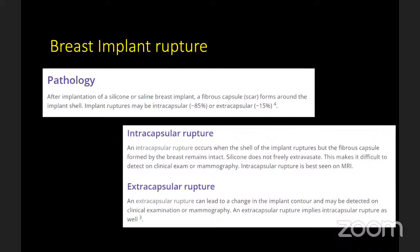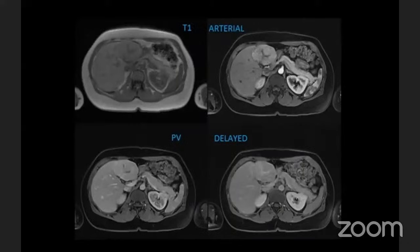Question six, and a reminder that questions nine and ten are the prize-winning questions: this is a liver lesion with T1 and post-contrast images in a 27-year-old patient — what is the diagnosis?